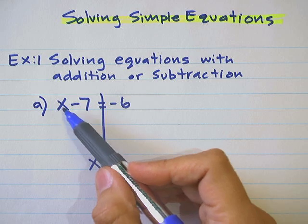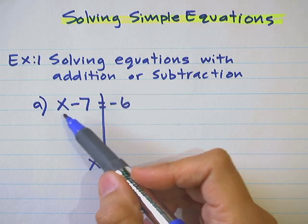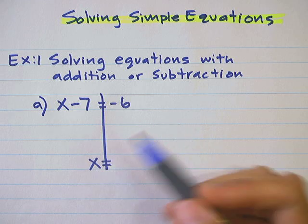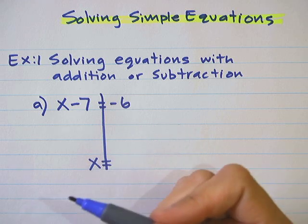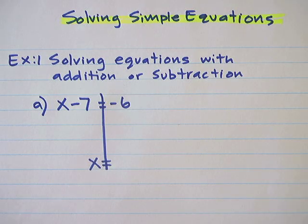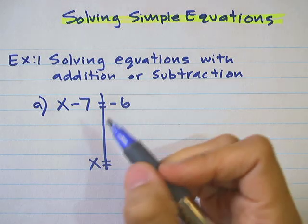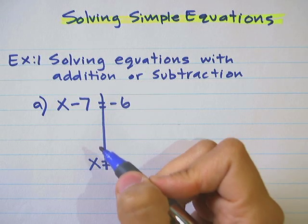Right now, we can probably think about it and figure out that 1 take away 7 is negative 6. But we want to go through the process of how to apply inverse operations. When we get to larger problems requiring multiple steps, we want to make sure we get the steps done — not just guess the answer.